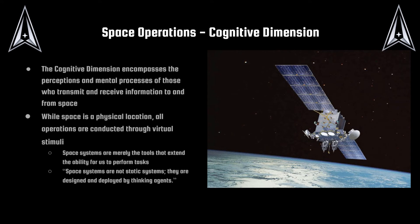Moving into the second dimension of space operations: the cognitive dimension. This encompasses the perceptions and mental processes of those who transit, transmit, and receive information to and from space. While space is a physical location, all operations are conducted through virtual stimuli. Space systems are merely tools that extend our ability to perform tasks, and as stated in the Space Force Capstone, space systems are not static — they are designed and deployed by thinking agents, which is us Guardians.